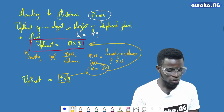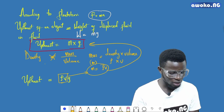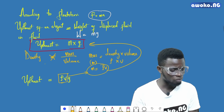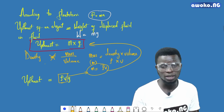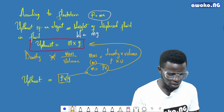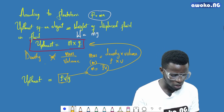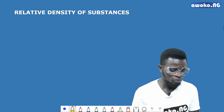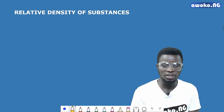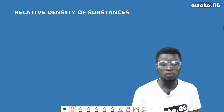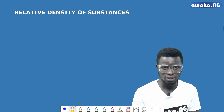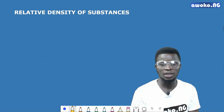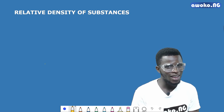This is the end of today's class on the equilibrium of bodies in liquids. In our next class, we are going to move a step further by considering the relative density of substances. See you in our next class.